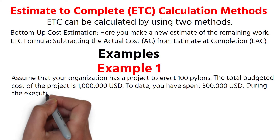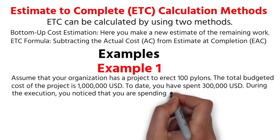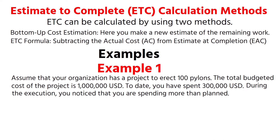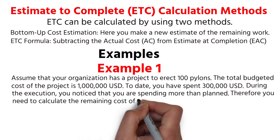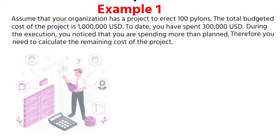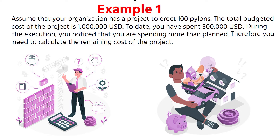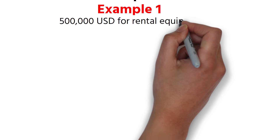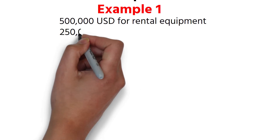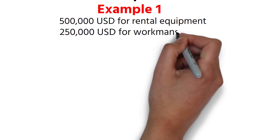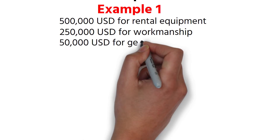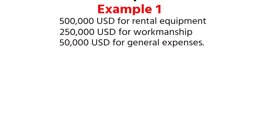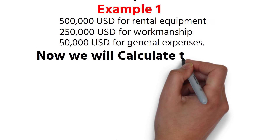During the execution, you noticed that you are spending more than planned. Therefore, you need to calculate the remaining cost of the project. You work with the construction team to estimate the cost of the remaining project works. According to your new estimations, you will pay: 500,000 US dollars for rental equipment, 250,000 US dollars for workmanship, and 50,000 US dollars for general expenses.